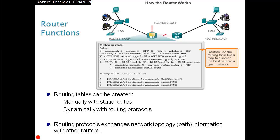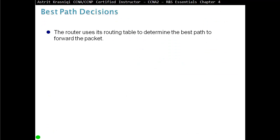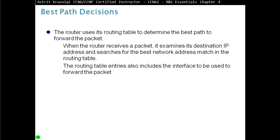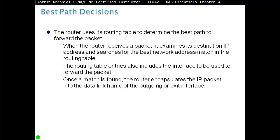Routing protocols exchange network topology information with other routers — they are very chatty, telling neighbors whatever they know. The router uses its routing table to determine the best path to forward the packet. When a packet is received, the router examines its destination IP address, searches for the best match in the routing table, and the entry also includes the interface to use to forward the packet.